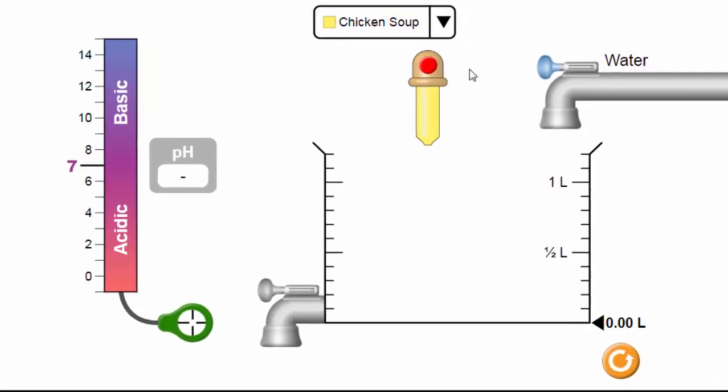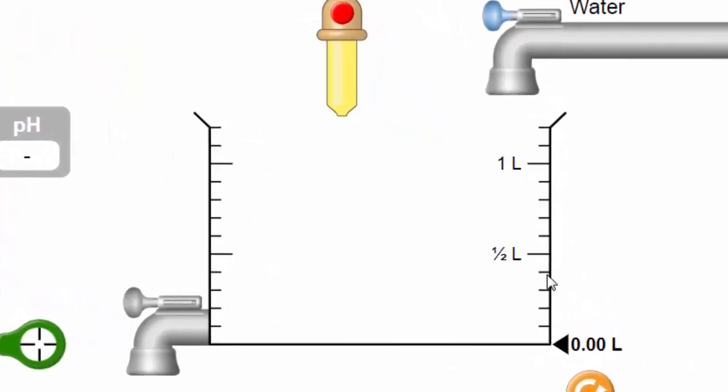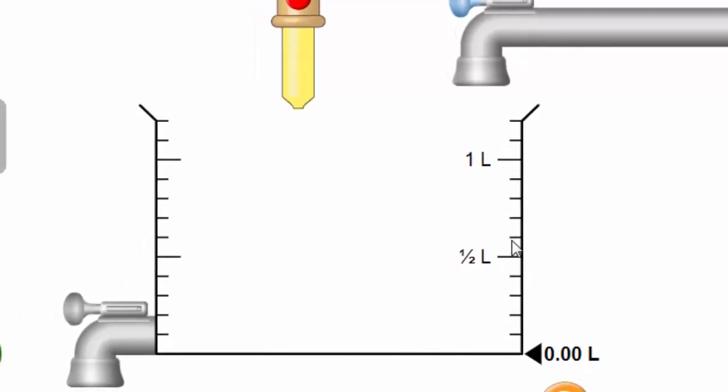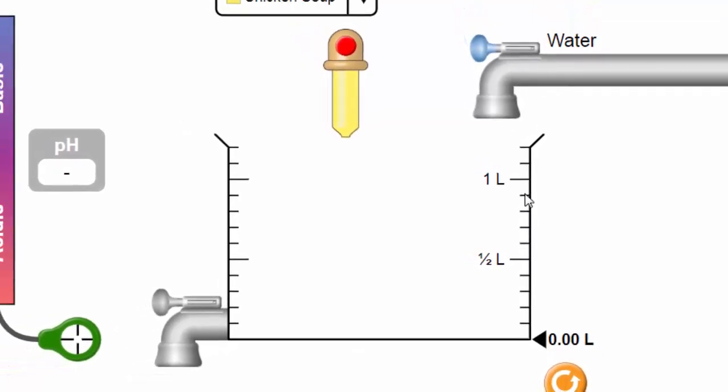For example, for chicken soup, if you look at the scale here, you can see the scale starts from zero, then this would be 0.1 liter, 0.2, 0.3, 0.4, this increment is 0.5, and so on—0.6, 0.7, 0.8, 0.9, and 1 liter.